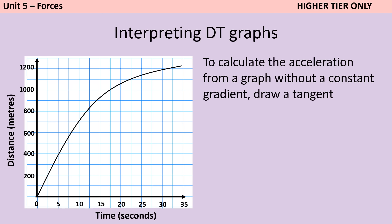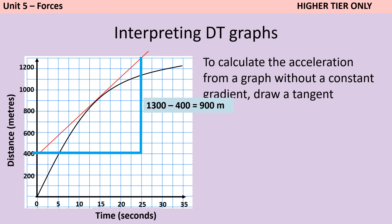If you're taking the higher tier then you should be able to draw a tangent and use that to calculate the speed at one specific point. Your most accurate calculations will be when your tangent is as long as possible. It's helpful to put your ruler on top of the curve rather than underneath it. For example, a tangent touching the graph at 15 seconds: if the change in y is 900 metres (from 400 to 1300 metres) and the time taken is 25 seconds, then the speed is 900 divided by 25 which equals 36 metres per second.